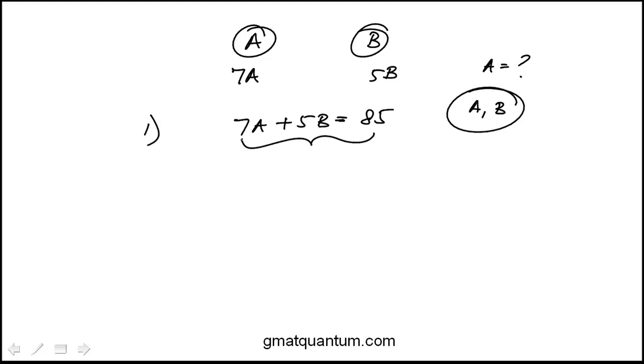So, for example, if A is 5, this would be 35. B would be 10. And if A was 10, then B would be 3. So I do have two distinct values.